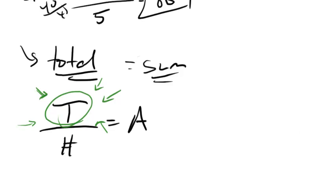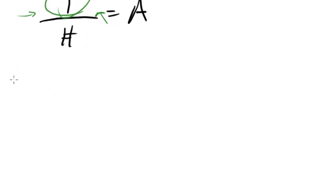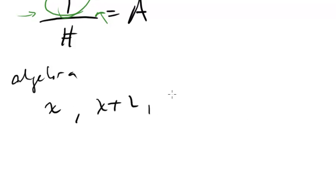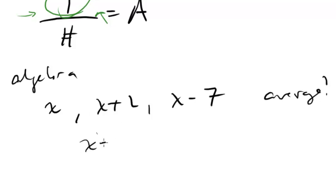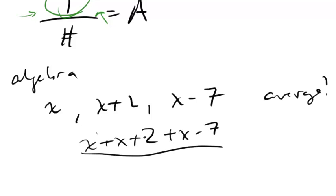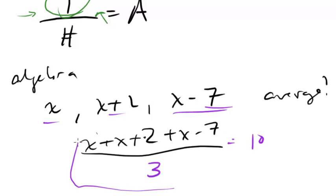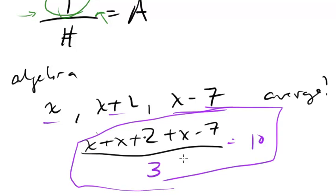The second way SAT problems make averages tricky is by using algebra. They might give you three terms — x, x plus 2, and x minus 7 — and ask for the arithmetic mean. Just do what you've done before: add them up — x plus (x+2) plus (x−7) — and divide by the total number of terms, which is 3. Then if they tell you the average equals 10, you have your equation. Cross-multiply, solve, and you're ready to go.